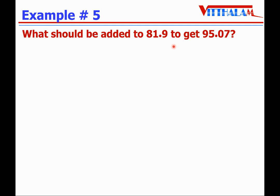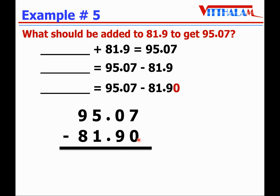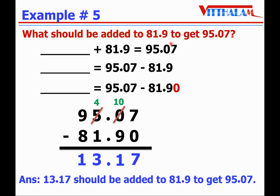What should be added to 81.9 to get 95.07? Let blank plus 81.9 equals 95.07. To find blank, take 81.9 to the right side — addition becomes subtraction. Make them like decimals by annexing a zero to 81.9, giving 81.90. Now do 95.07 minus 81.90: 7 minus 0 is 7, 0 is smaller than 9 so borrow — 5 becomes 4, 0 becomes 10, 10 minus 9 is 1, put decimal point, 4 minus 1 is 3, 9 minus 8 is 1. So 13.17 should be added to 81.9 to get 95.07.